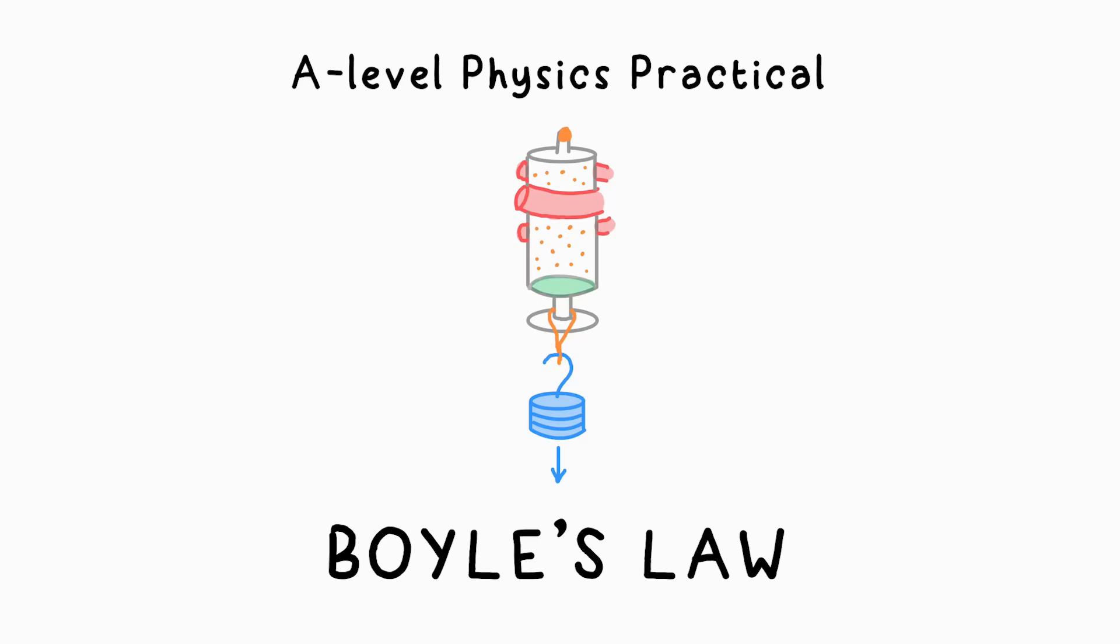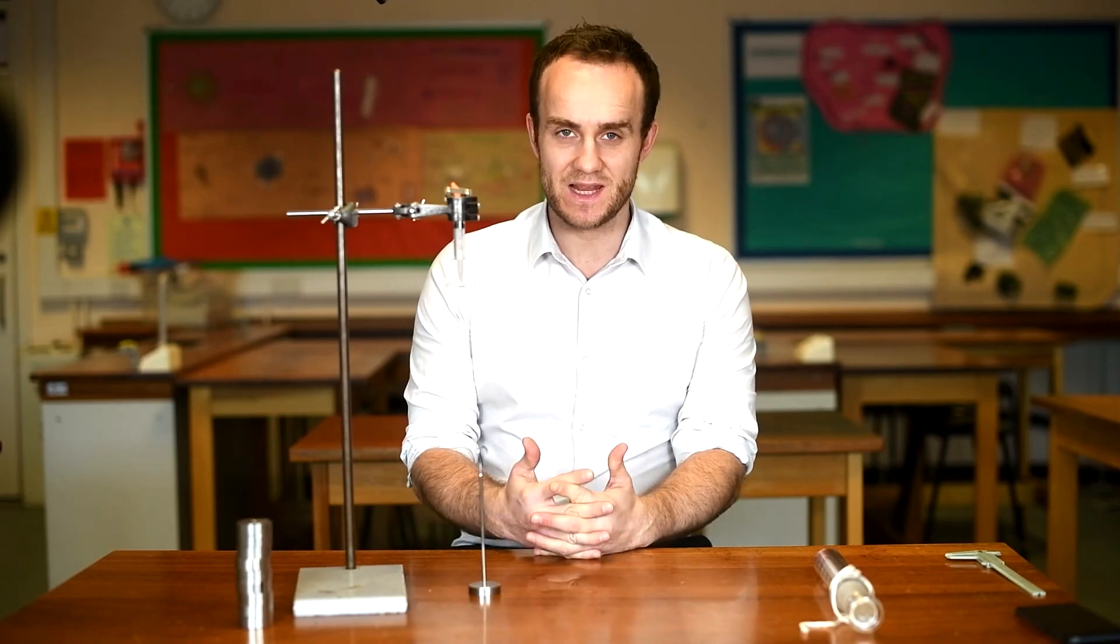I'm going to show you how to do the A-level physics required practical verification of Boyle's law. That is, for a constant temperature, the volume of a gas is inversely proportional to the pressure. It's a fairly simple one, but you've got to think carefully if you want to get some accurate results.